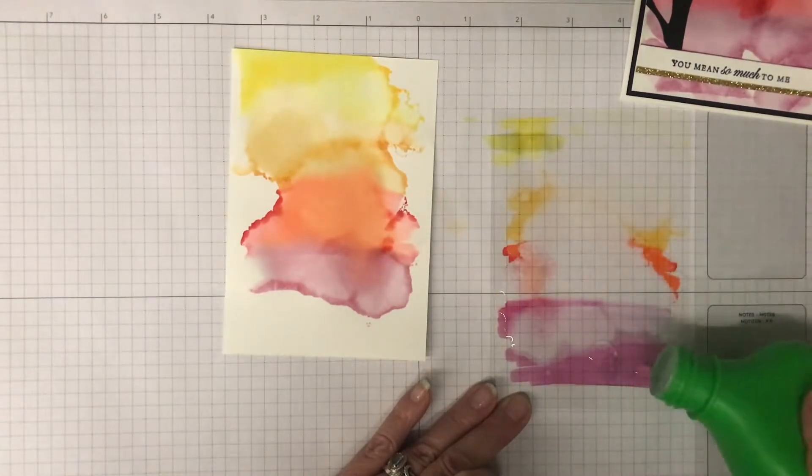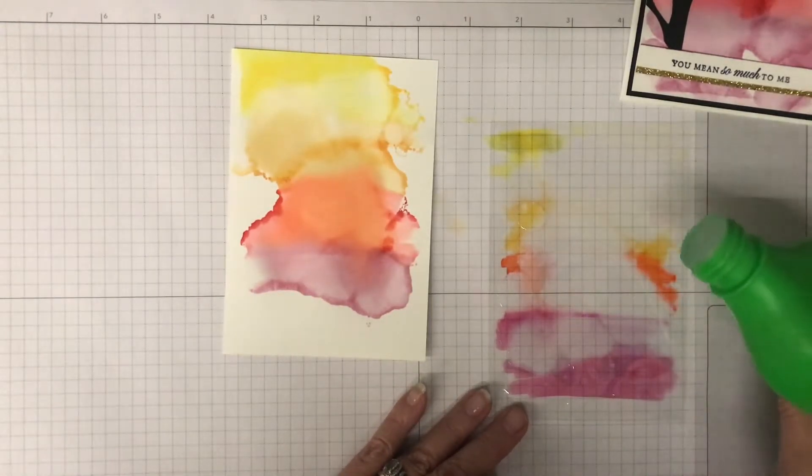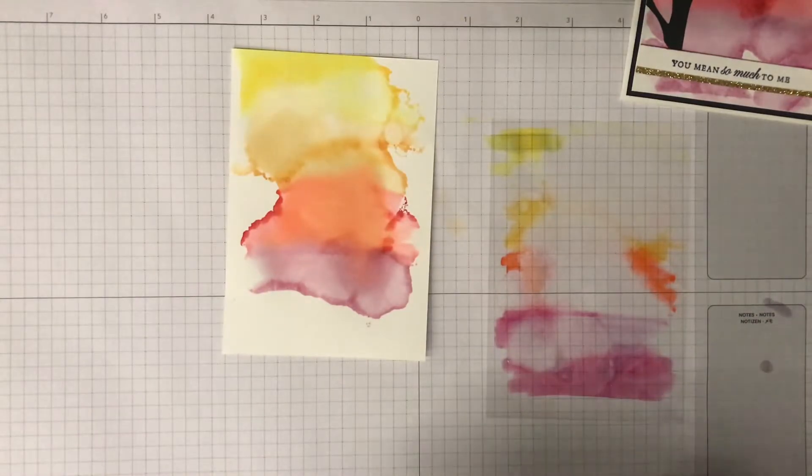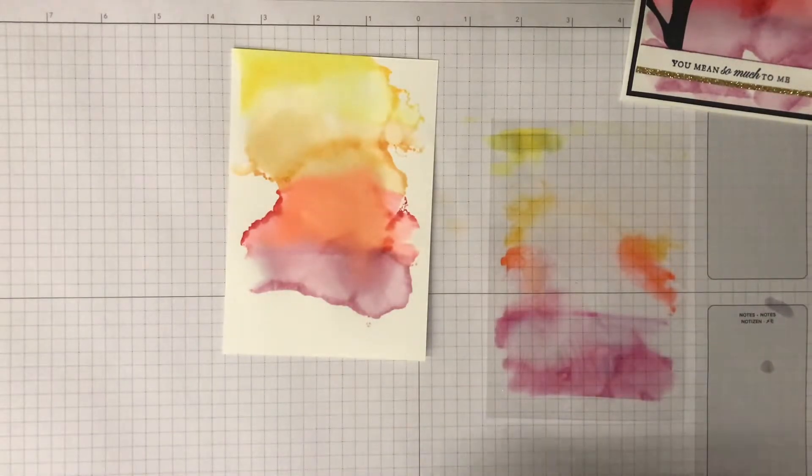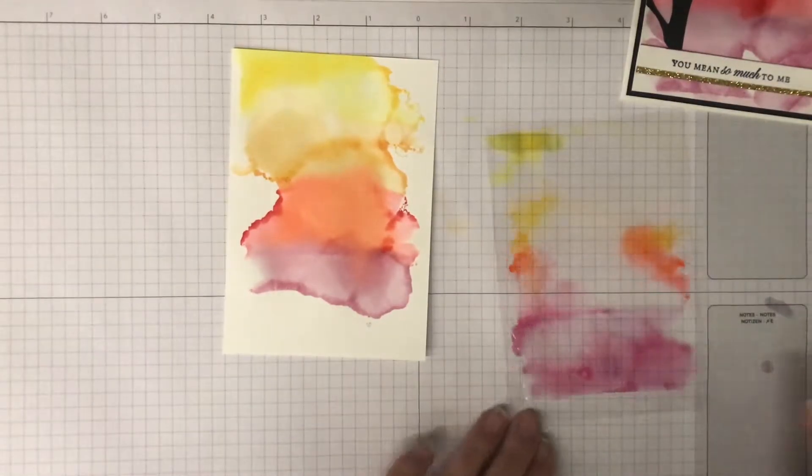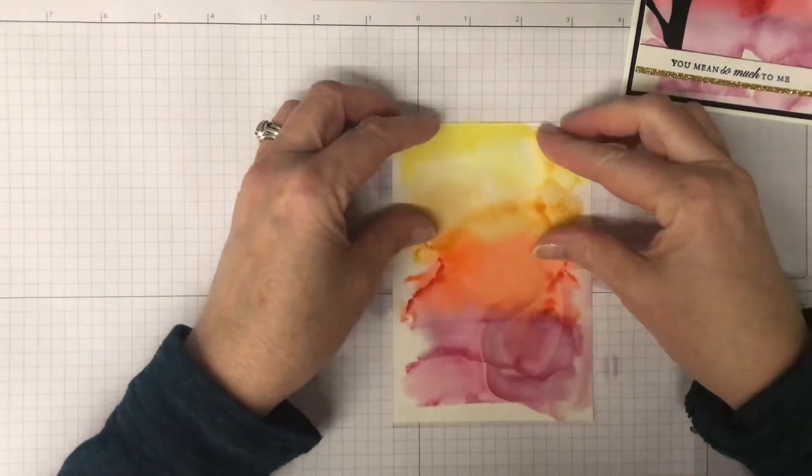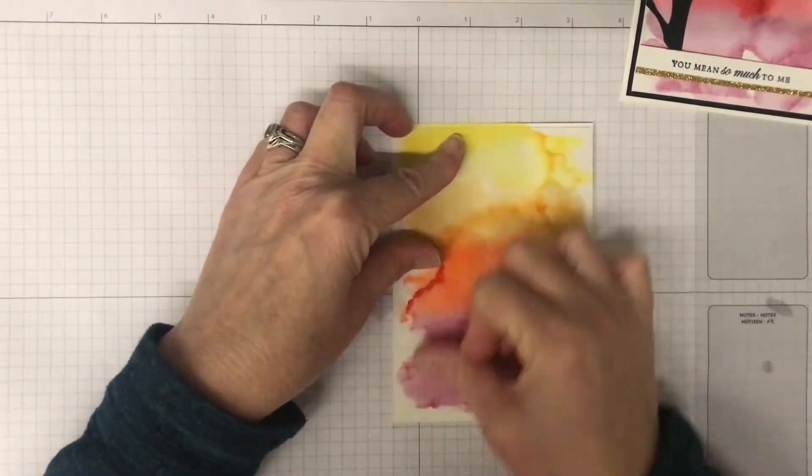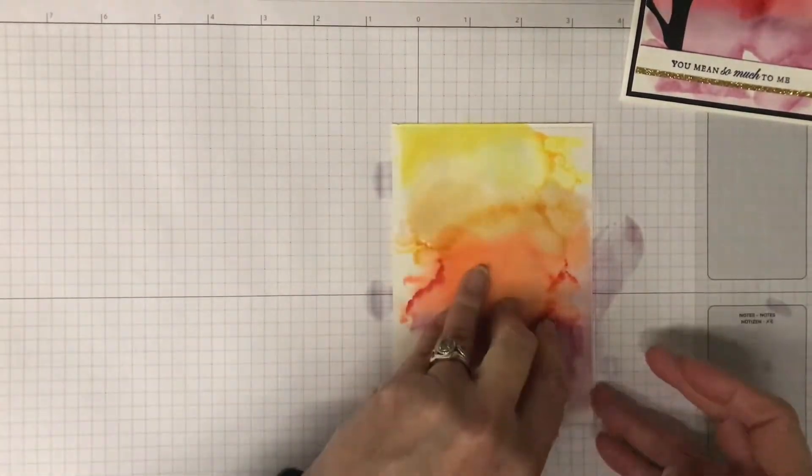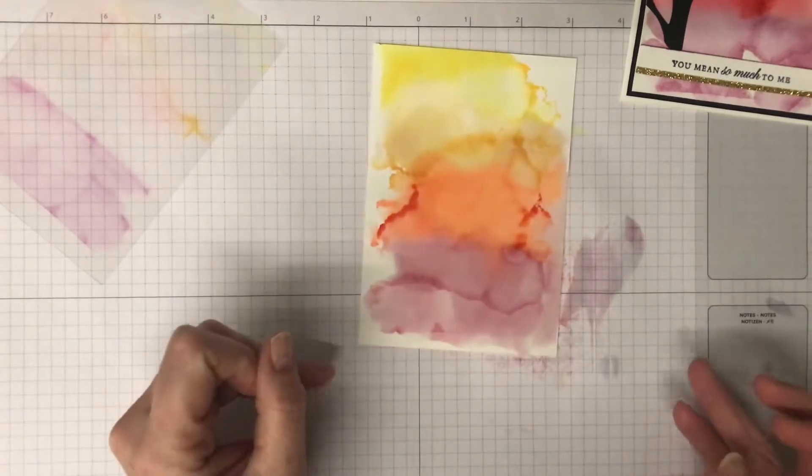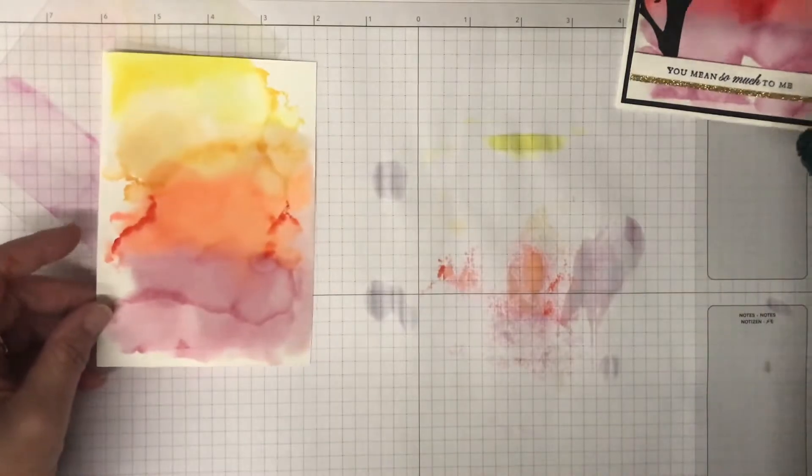I actually have no idea what it's going to look like this time. I'm just going to pop that straight over onto here and you can kind of see how the alcohol moves it around. It should have moved a little more, and it has. That's how it's looking now and I would just leave that to dry. It's as simple as that.